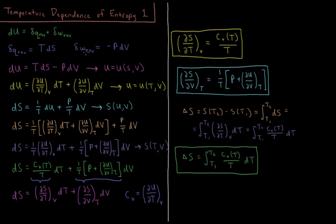Also from our videos on work, we know that dwrev equals minus p dV — the pressure times the change in volume of the system, which is the mechanical pressure-volume work. So the change in internal energy during some small perturbation to our state, du, is equal to TdS minus pdV.